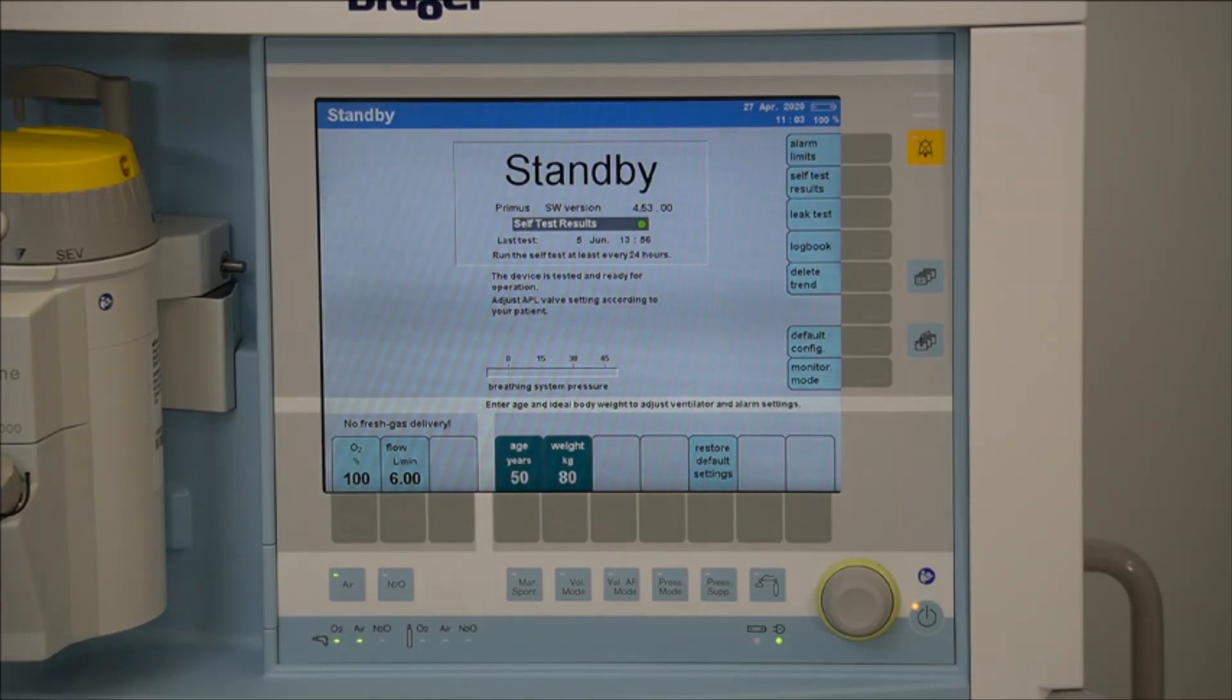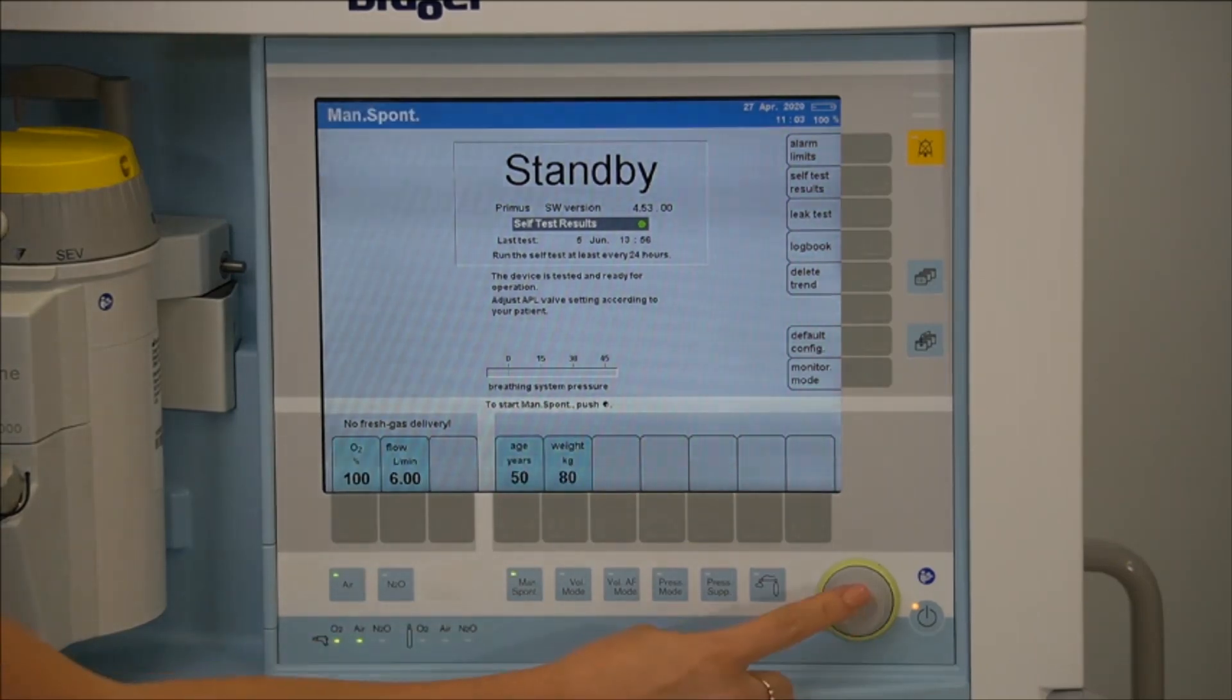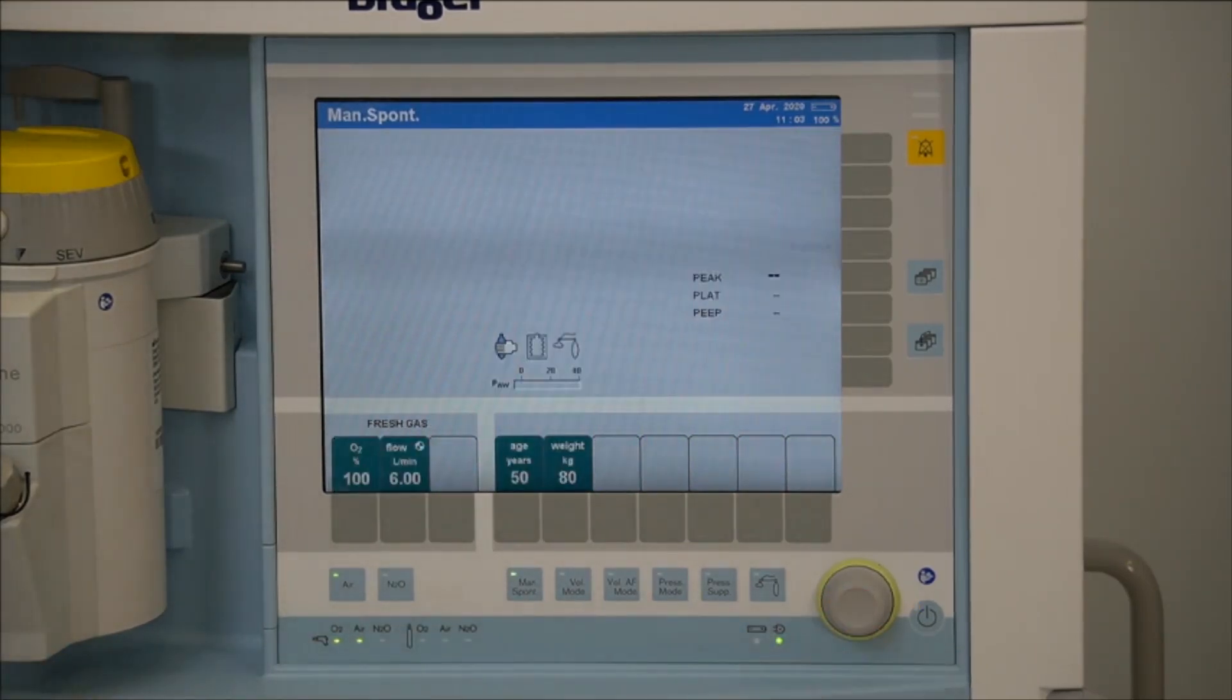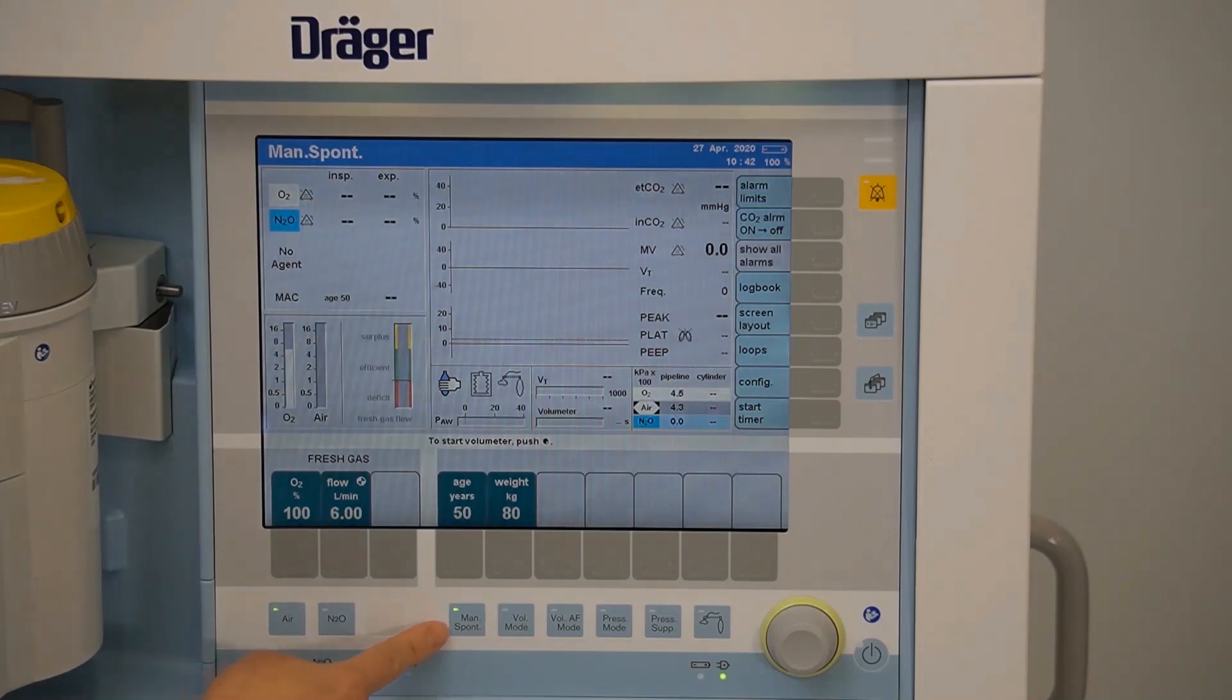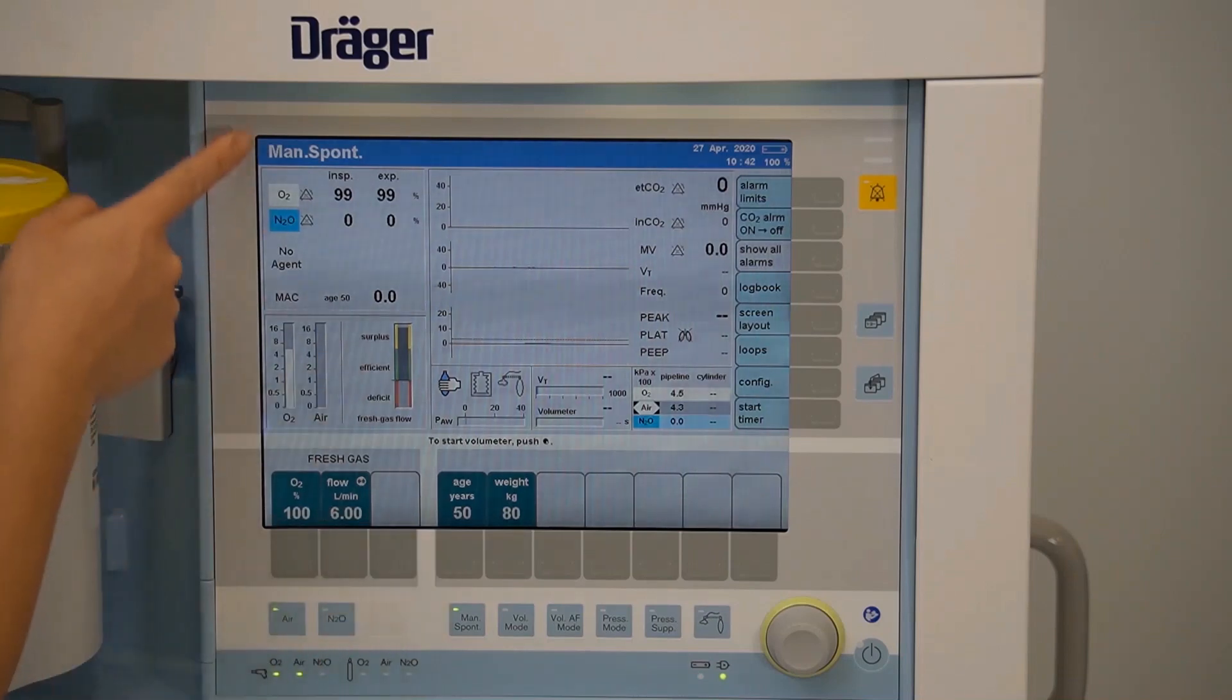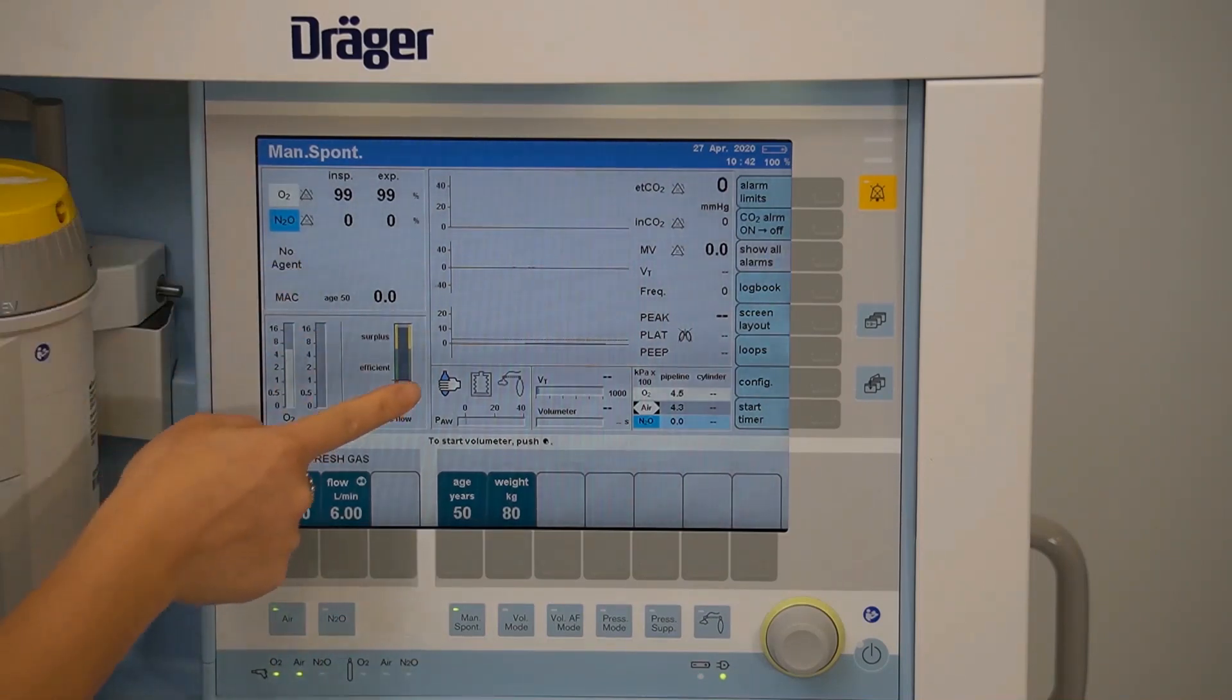Generally you'll start with manual spontaneous mode, select your mode and confirm with the rotary knob. Your current mode is highlighted with the LED light indicator, is stated at the top of the screen, and also highlighted with this graphic.